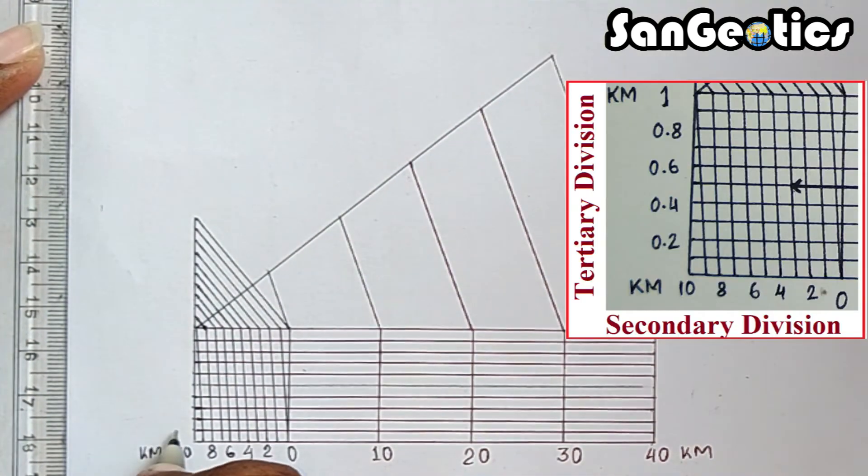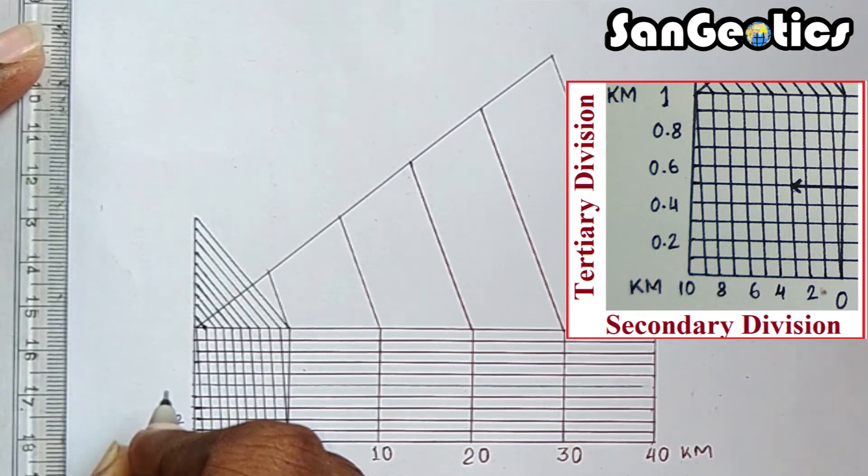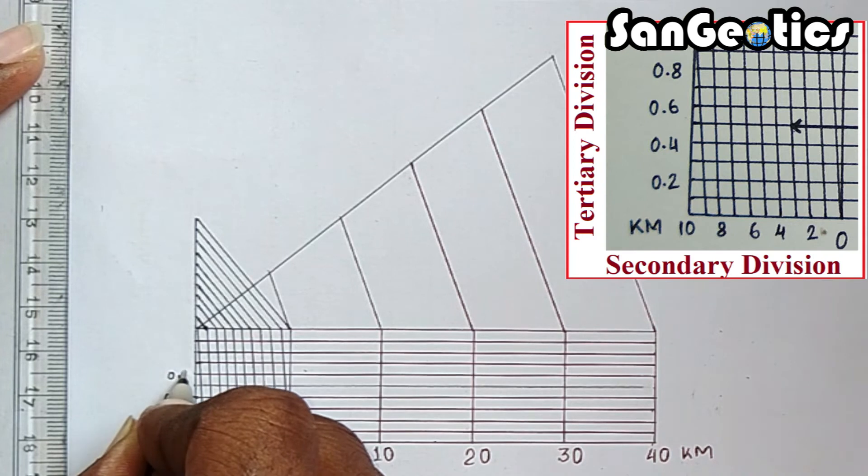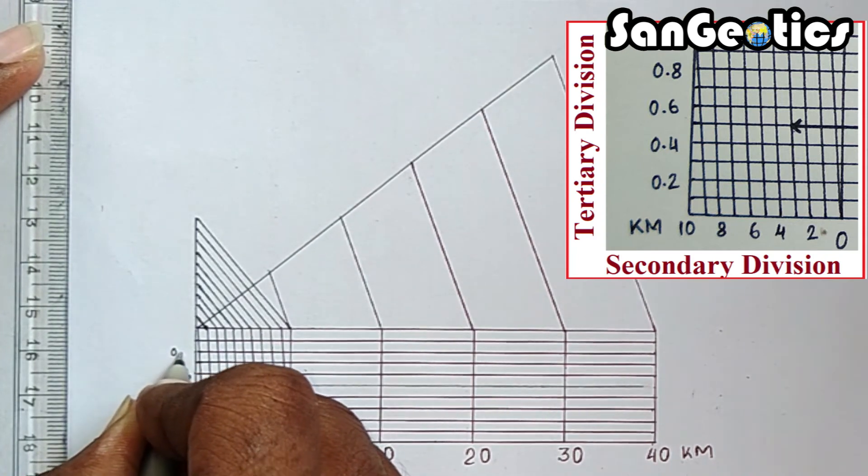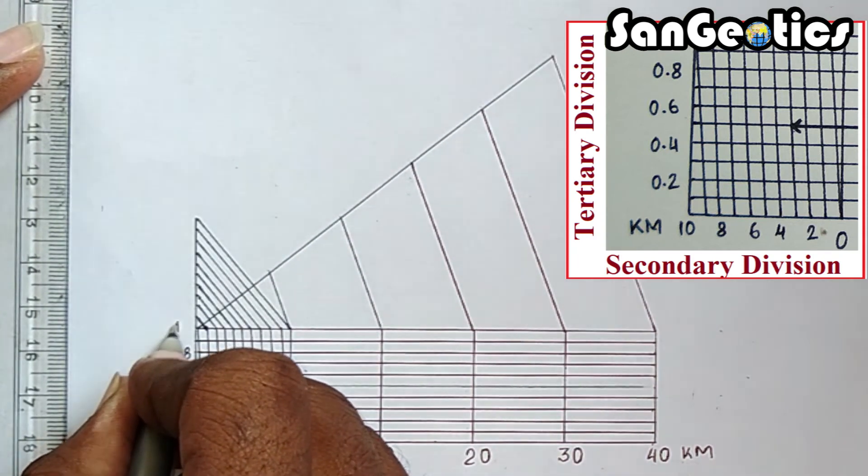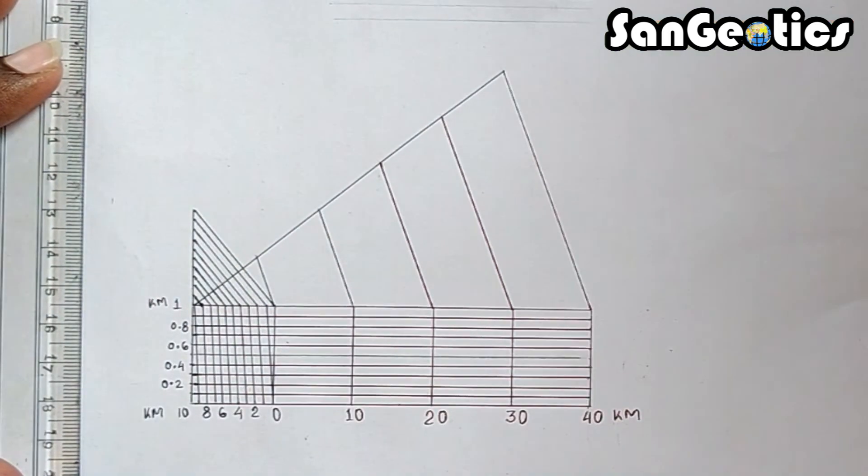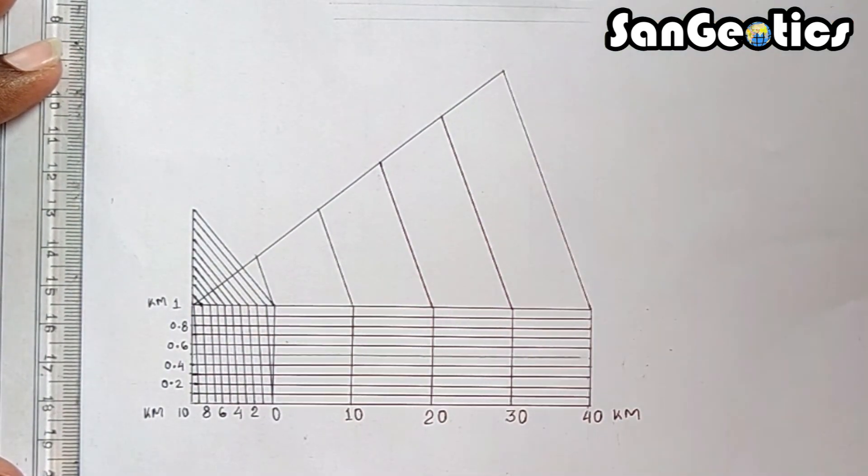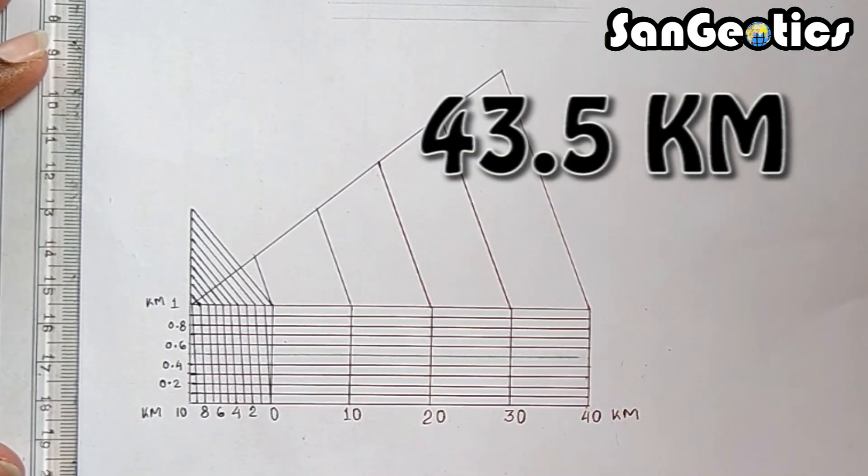And tertiary divisions are written as 0.2, 0.4, 0.6, 0.8 and 1 km. Now, we read the length 43.5 km on this scale.